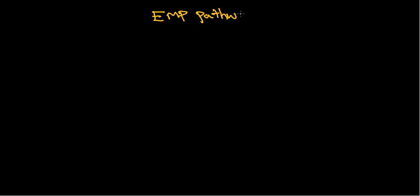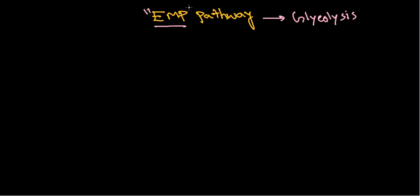Let's talk about what is called the EMP pathway. EMP pathway — what is it? This is nothing but a type of glycolysis, simple as that. There are different variations of glycolysis pathway, but the most common type is called the EMP pathway, based on the discoverers — the Embden-Meyerhof-Parnas pathway. I have separate videos on glycolysis in my YouTube channel if you want detailed stages.